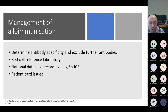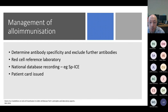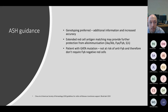In terms of management of alloimmunization, if a DAT is positive it's important to ask the lab to perform an eluate to try and identify a new antibody. Samples are often referred to the regional red cell reference laboratory, particularly in complex cases. It's important that any new antibodies are added to the national database and patient record, and the patient should be issued with a card.